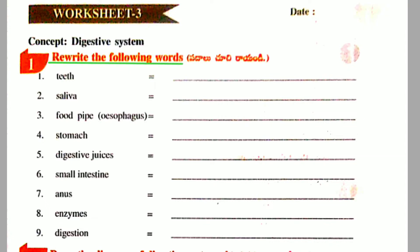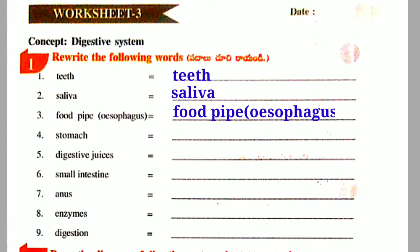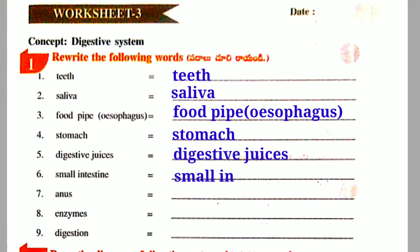Look at and rewrite the following words: Teeth, Saliva, Food Pipe, Esophagus, Stomach, Digestive Juices, Small Intestine, Anus, Enzymes, Digestion.